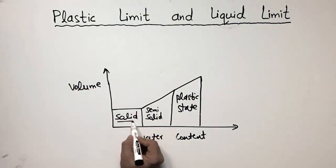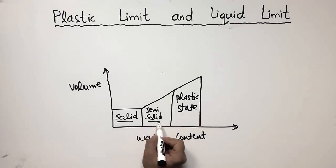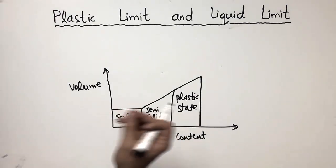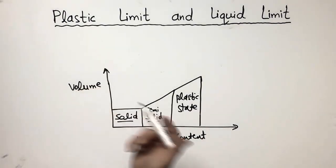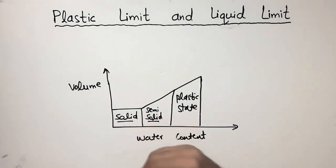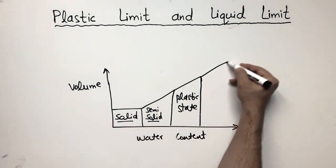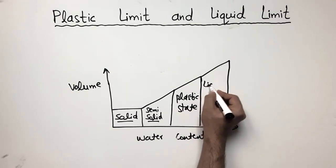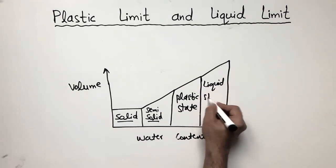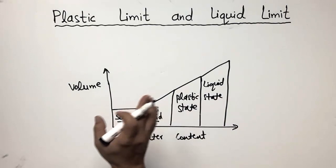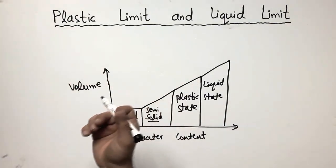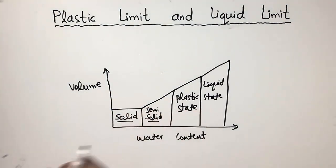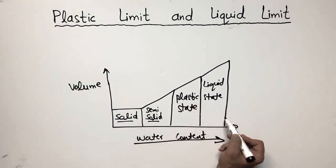So first was the solid, where there was no water. When we add some water, we get the semi-solid, which behaves like a solid with less liquid. But in the plastic state, it behaves more workable than the semi-solid and solid. By addition of more water, we get the liquid state of the soil — the soil mass now flows like a liquid, like water. By increasing the water content, you get the liquid state, from solid state to the liquid state.